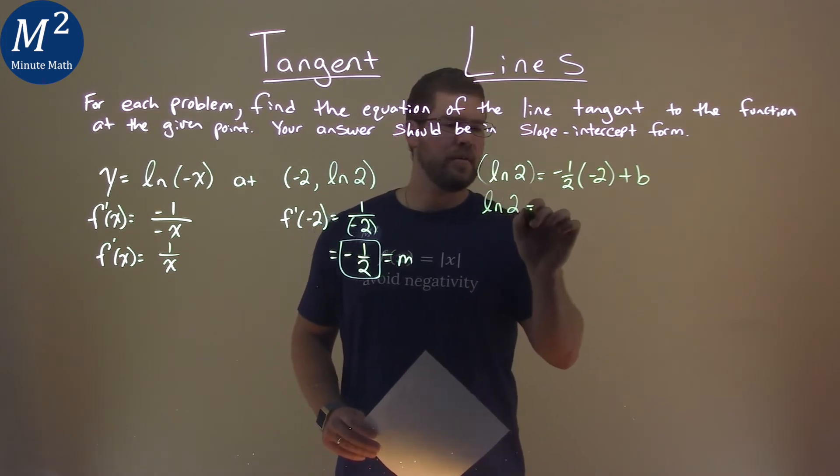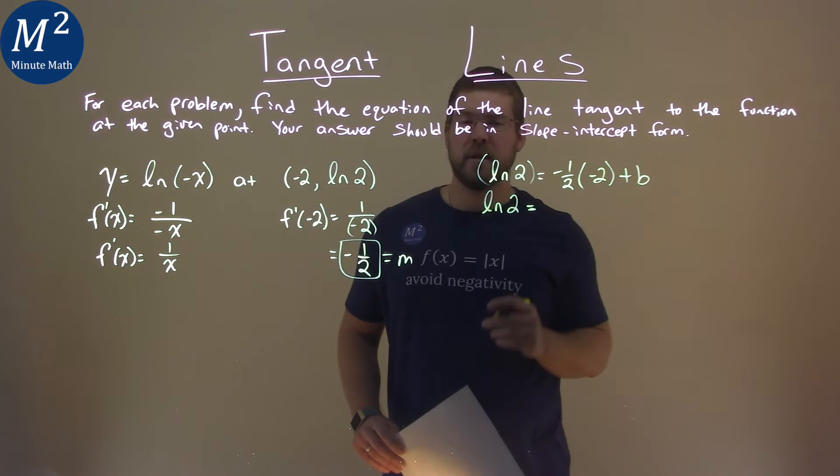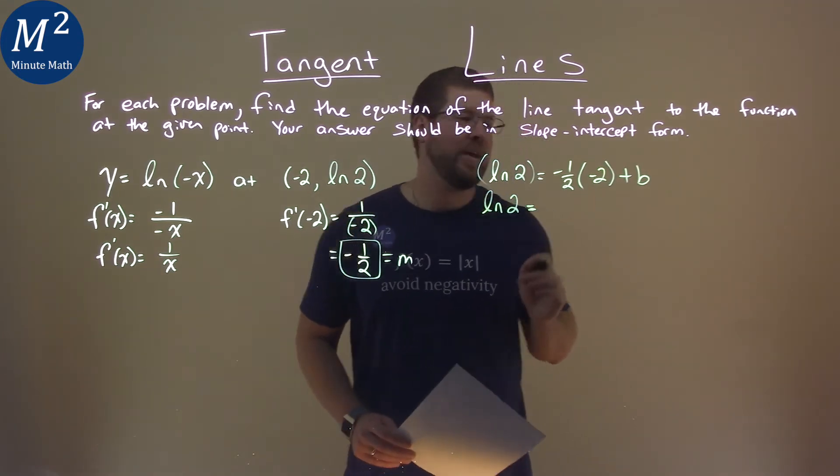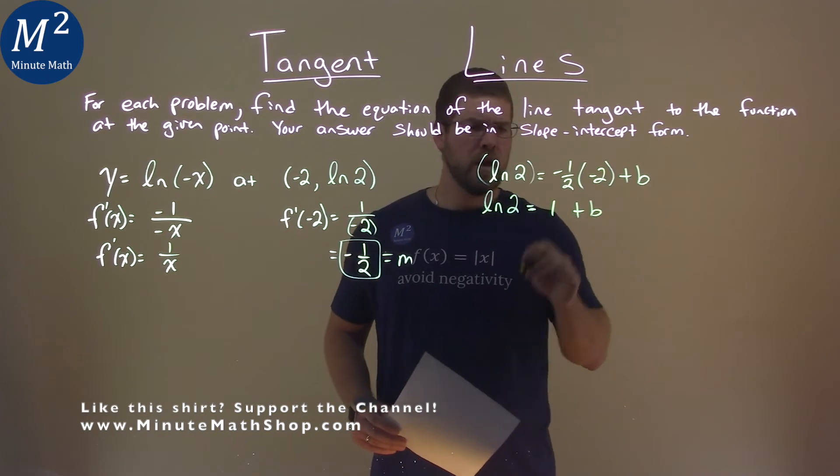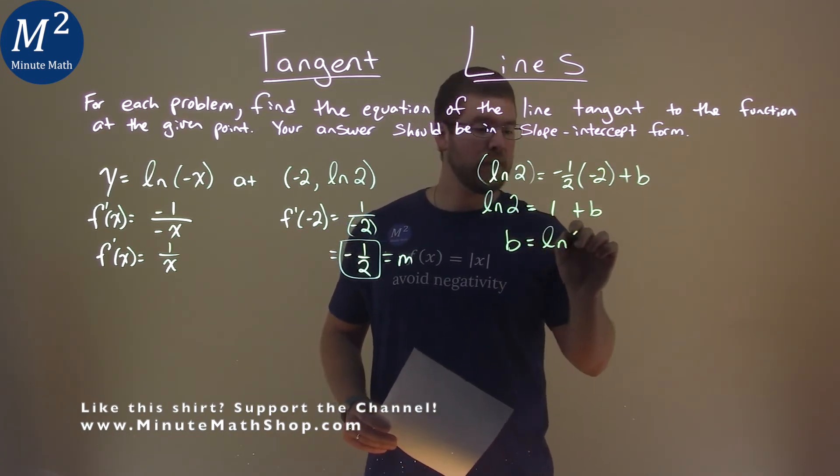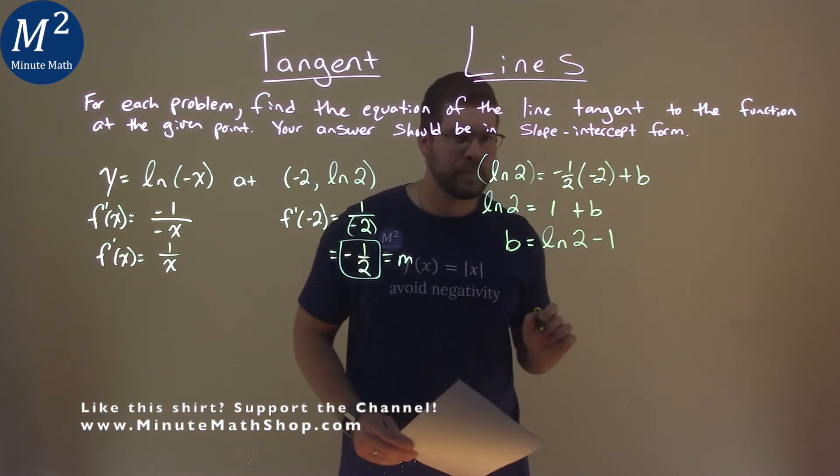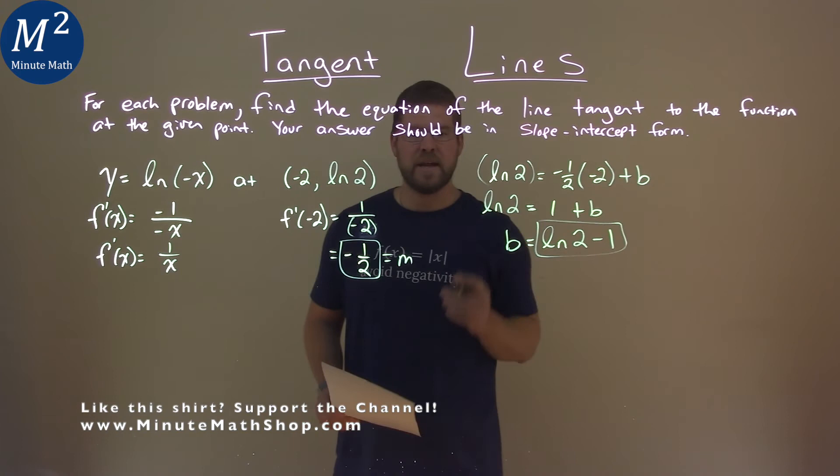Natural log of 2 stays here, don't rush to your calculator to get a decimal. Negative 1 half times the negative 2 is a positive 1. A positive 1 here, plus b. Subtract 1 to both sides, and b equals a natural log of 2 minus 1. So, don't be afraid of that b value, you don't need to just get a decimal, let's leave it as it is.